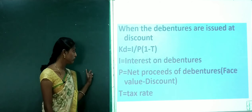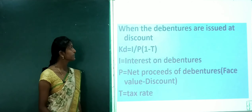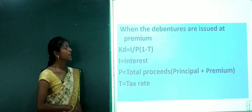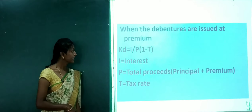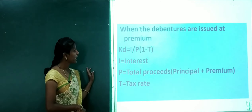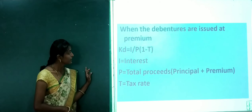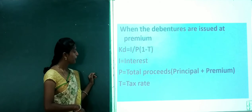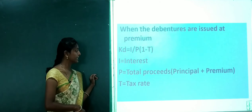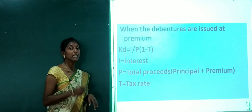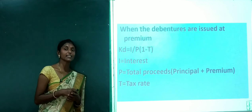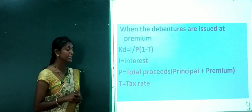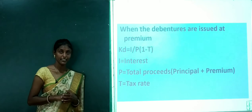When the debentures are issued at premium, KD equals I divided by P, then multiplied by (1 minus T). Here I means interest, P means total proceeds — that is principal plus premium. Discount is minus, premium is plus. T equals tax rate.